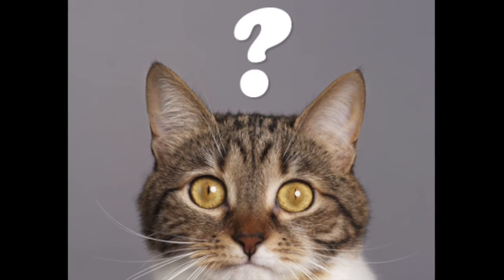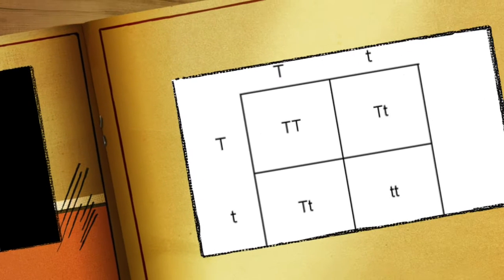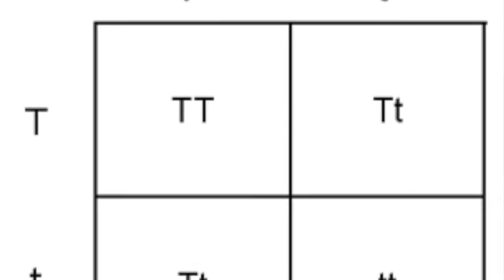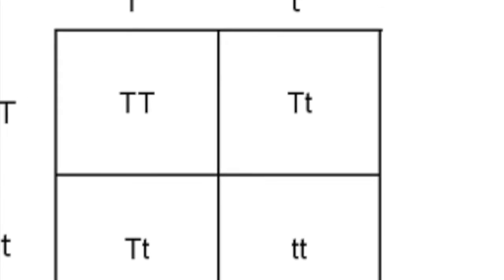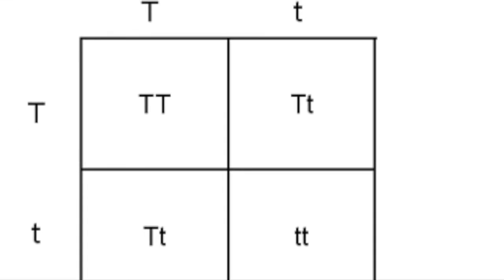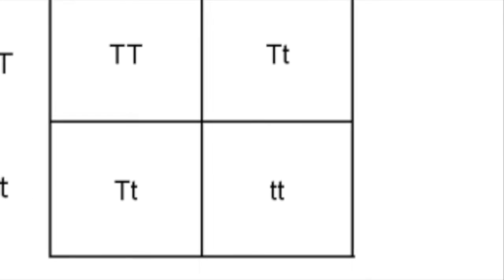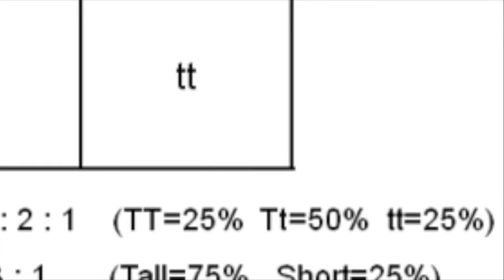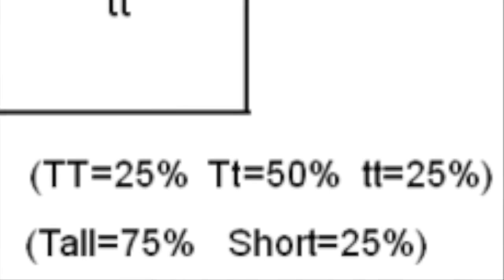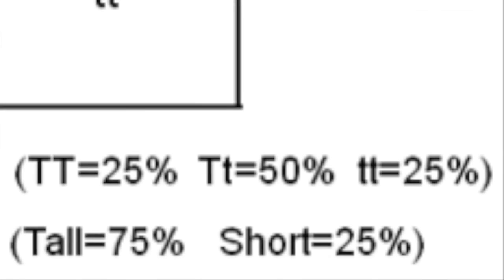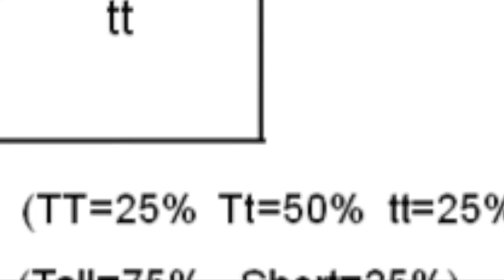Can organisms with different genotypes have the same phenotype? The phenotype of a pea plant that is homozygous dominant for the tall trait is tall. The phenotype of a pea plant that is heterozygous is also tall. So yes, two different genotypes can result in the same phenotype. Remember, the recessive phenotype will only be expressed when the dominant allele is absent, or when the individual is homozygous recessive.